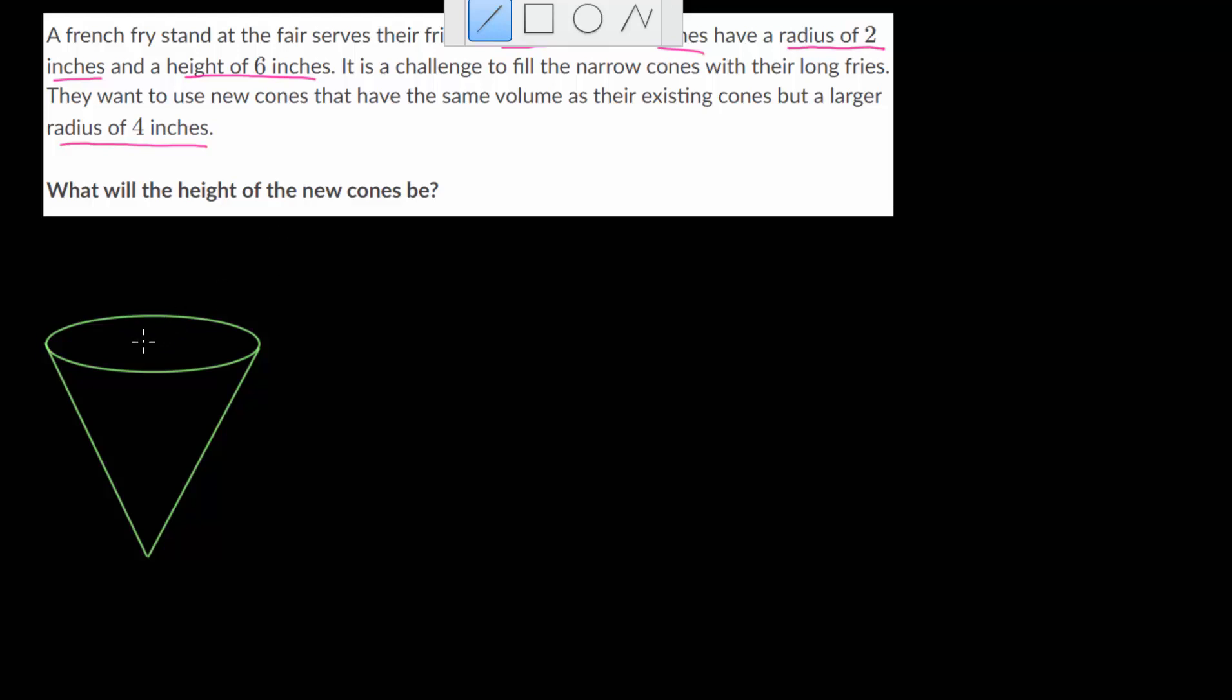The radius that they're referring to is the radius of the base. The radius is just the distance from the center of the base to the edge of this circle, and it's 4 inches. We need to find the height of this new cone. What we're told is that the new cone has the same volume as the existing cones.